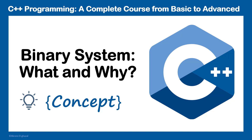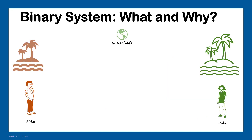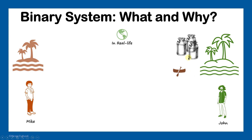In this video I'm going to explain what a binary system is and why computers use it. Let's start with a simple story. We have two people, Mike and John. Mike buys milk from John, and every day in the morning John uses his boat and takes several cans of milk to Mike. The problem is that John wants to know how many cans of milk to bring each day. Mike came up with an idea to use a torch to let John know.